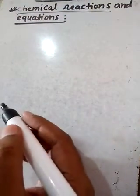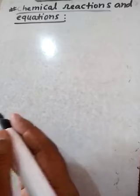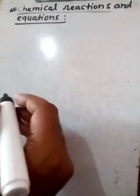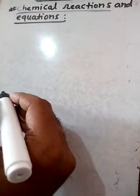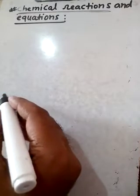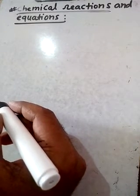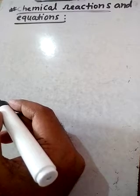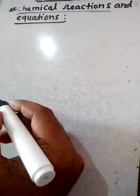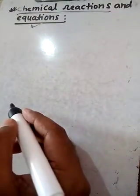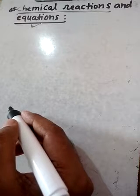First we look at chemical reactions. When two or more substances react chemically to form a new substance with different properties, according to a reaction, that is called a chemical reaction.